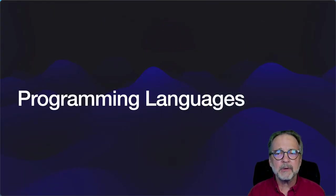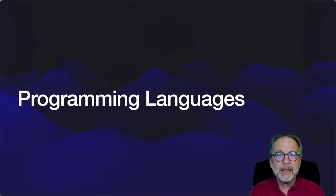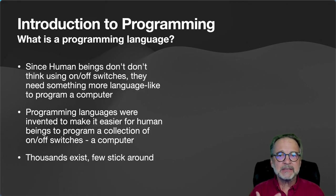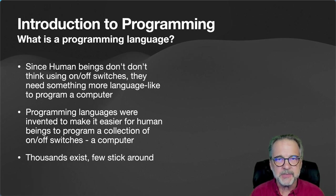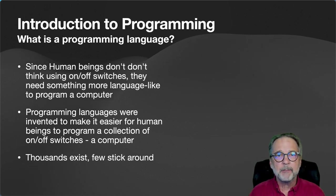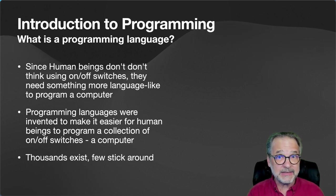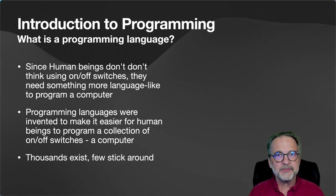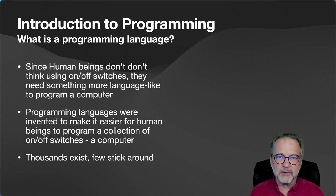Let's talk more about programming languages. I'm going to create a video where I open up a computer and identify its components, but for right now, let's talk about what a programming language actually is. Since human beings think in base 10, not base 2, we need something more language-like to program a computer. Programming languages were invented back in the 1950s to make it easier for human beings to program a collection of on and off switches. Thousands of programming languages exist — only a few stick around, and those are the most popular because they're the most useful.